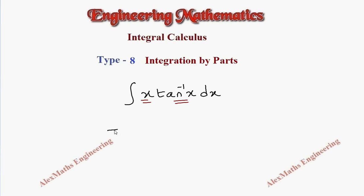As per the procedure we have to write ILATE and mark what are the functions present so that we can choose which is u and which is dv. So here x is algebraic and tan inverse x is inverse trigonometric function. The first that comes in the order of ILATE is I which is tan inverse x and we are taking that as u.